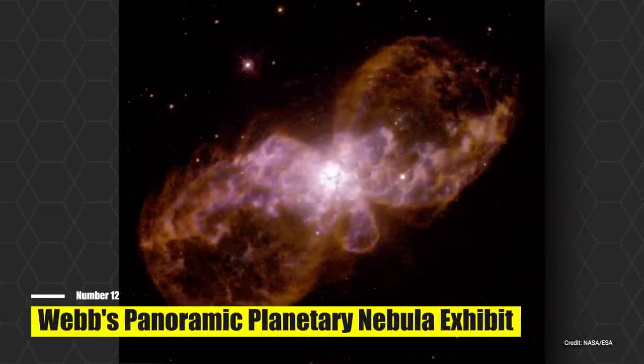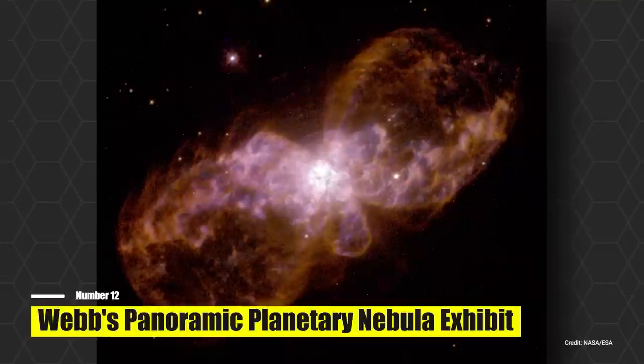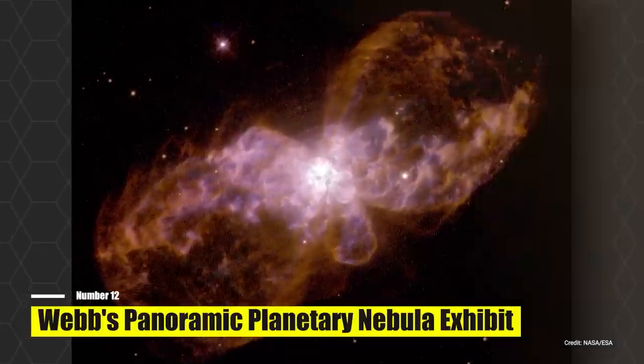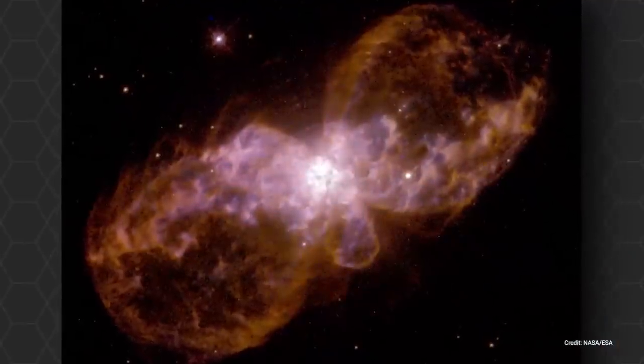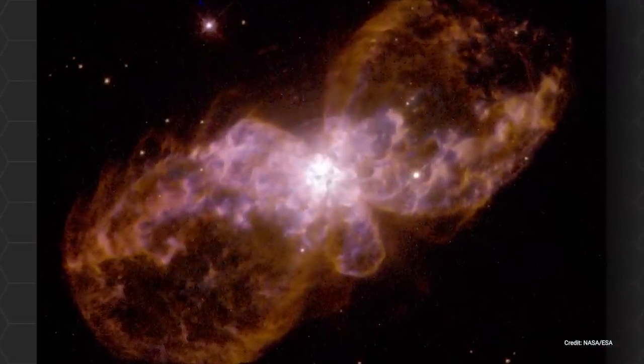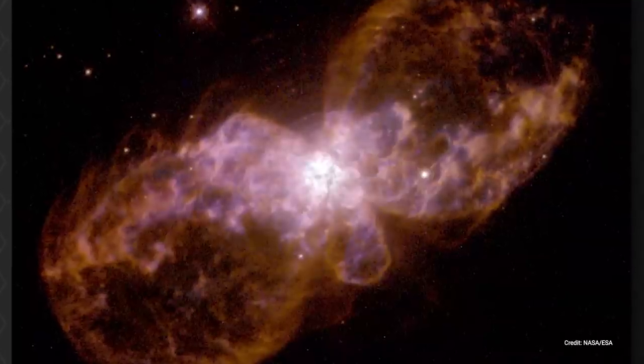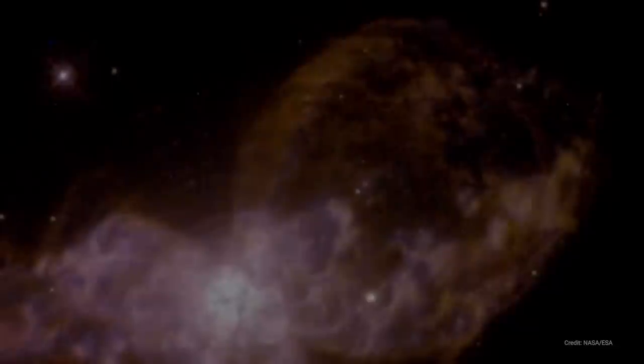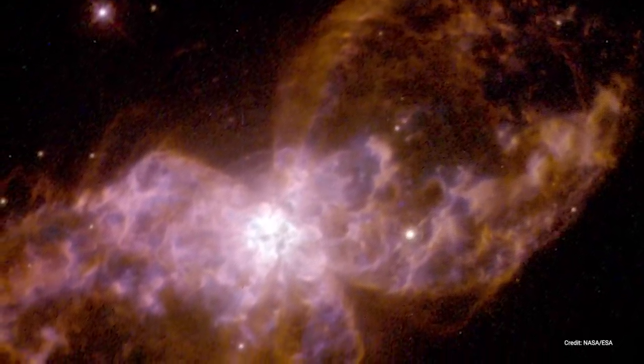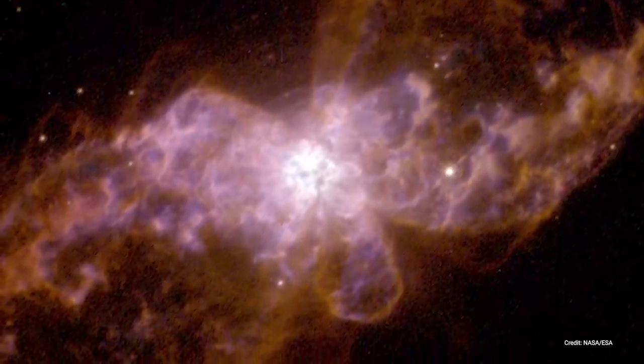Number 12, Webb's Panoramic Planetary Nebula Exhibit. Captured by the James Webb Space Telescope, this image features a breathtakingly beautiful butterfly, or more accurately, a bipolar nebula. This is a formation that has two distinct lobes of material ejected from a central star. Imagine two balloons expanding from the heat of internal heaters, and you get a sense of how the nebula's wings form. Fast winds, loaded with material from the dying central star, push outward, causing the lobes to expand and shape themselves into the striking butterfly silhouette we observe.